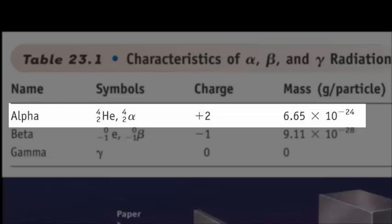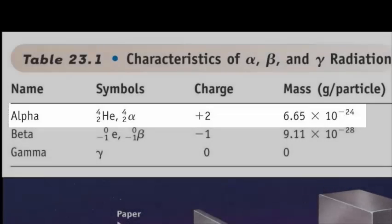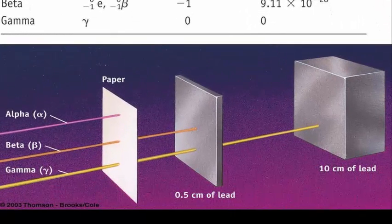An alpha particle is just a helium-4 nucleus. Now, it's a helium-4 nucleus with no electrons, which is why it has a charge of plus 2. And its mass is fairly big, 6.65 times 10 to the negative 24th grams for each of these particles. When we're talking about tiny particles, that's a significant mass. Alpha particles are pretty big.